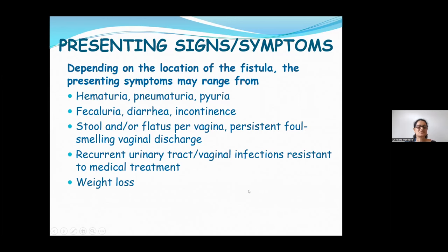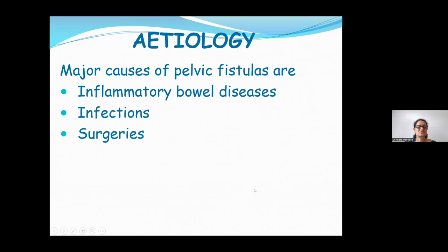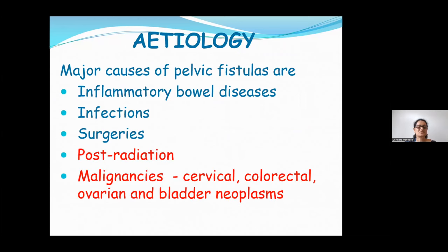Common causes of pelvic fistulas — benign etiologies include inflammatory bowel diseases, infections, and surgeries. The most common cause is post-radiation or direct malignancies: cervical, colorectal, ovarian, and bladder neoplasms can themselves present with fistulas. Post-operative cases in the acute or chronic phase can have fistulation at the site of anastomosis, due to dehiscence, or due to recurrence.